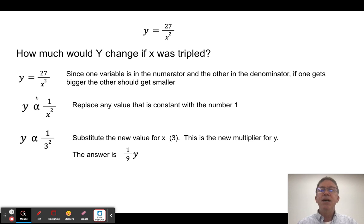What we're going to simply do is we're going to switch to a proportionality and we're going to take anything that didn't change. In this case, 27 isn't going to change. And we're going to replace it with the number one. Anything that doesn't change, it's just going to be a one. And I say, well, really, what that tells you then is y is proportional to one over x squared. So if x is tripled, that's three squared. All right, that gives me nine. So y is going to be proportional to one ninth. So that means my new answer is one ninth of the original y.